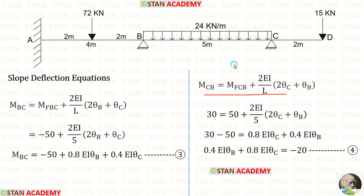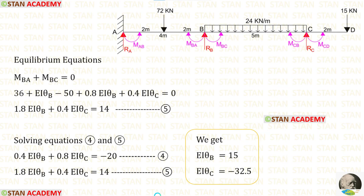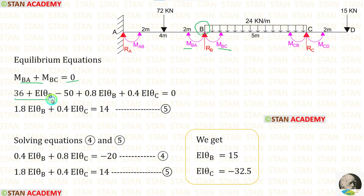Now let us apply the equilibrium conditions. We know MCB equals 30; substituting into the slope deflection equation and rearranging gives our first equilibrium equation. For the second equilibrium equation at joint B, MBA plus MBC equals 0. Substituting the slope deflection expressions for MBA and MBC and adding the two equations gives the second equilibrium equation.